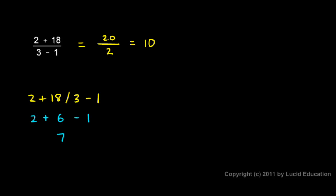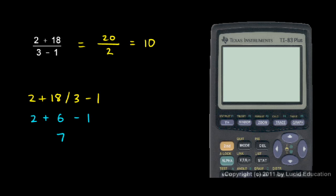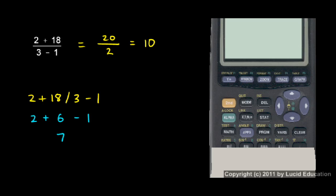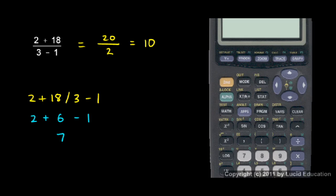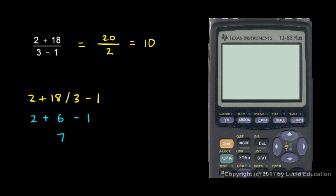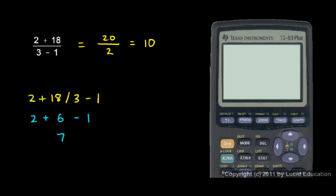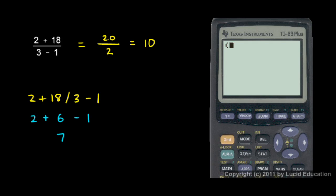So let's actually look at this on the calculator. Most calculators have parentheses, in this particular calculator they're right down here, next to the division key, and if I use those properly, and I type in, in parentheses here, 2 plus 18, close parentheses, divided by, and then in parentheses, the denominator, 3 minus 1, I should get 10. And there it is.